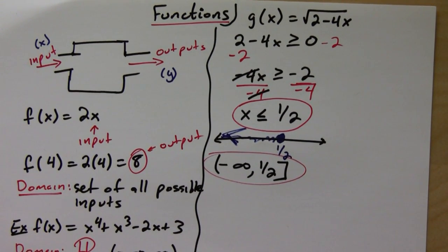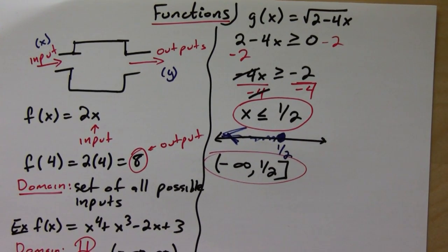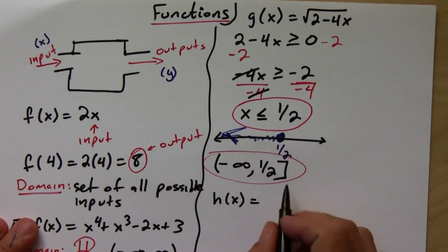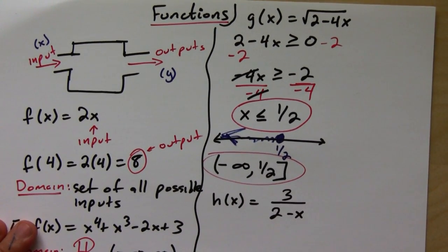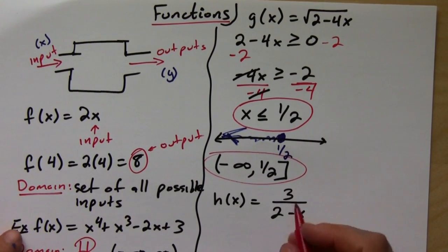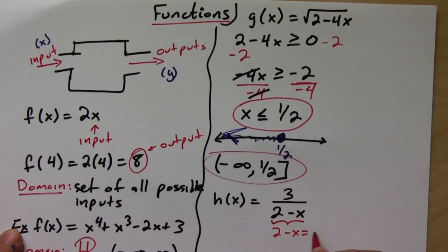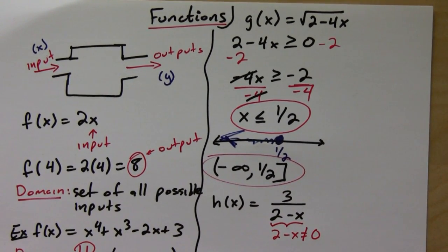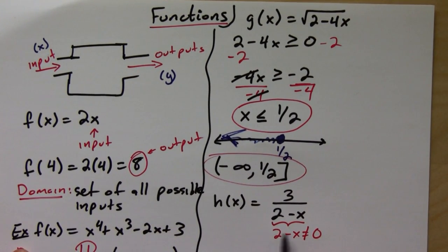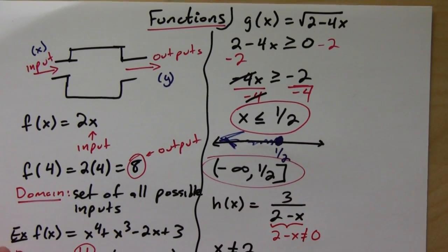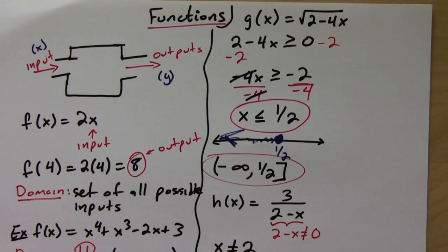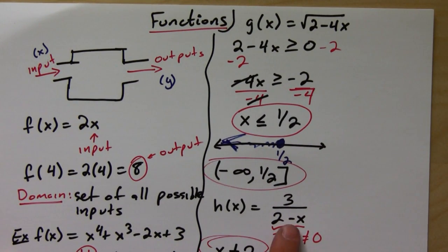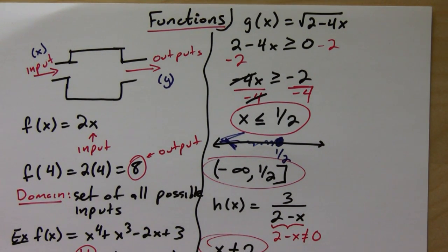Now, for example, rational functions. Just a simple one: h(x) = 3/(2 - x). Notice that you can plug in any number except what makes the denominator 0, because the denominator cannot equal 0. It's undefined. So you know that x cannot equal positive 2. x can be any value except positive 2, because when you plug in positive 2, you get 0 in the denominator and that's not allowed.